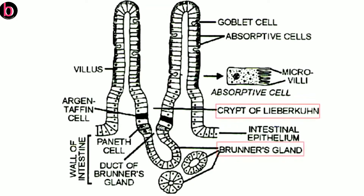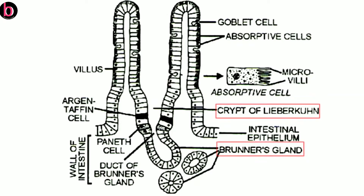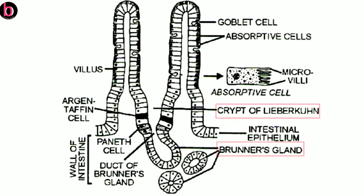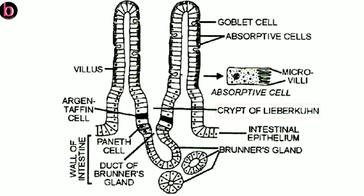Intestinal gland is a collective name for these two parts: crypts of Lieberkühn and Brunner's gland. Crypts of Lieberkühn are responsible for secretion of a number of enzymes that are functional in alkaline medium, while Brunner's gland is responsible for secretion of mucus.